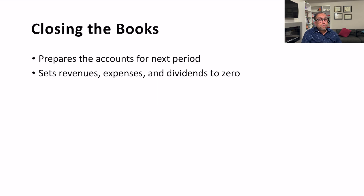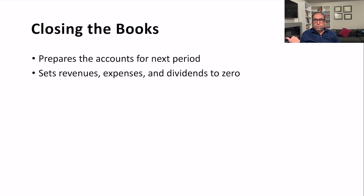We need to close the books because revenue, expense, and dividend accounts are temporary accounts. They are open for one accounting period — one year — and after that we have to close them so that we start a new year with a clean slate: no expenses, no revenues, and no withdrawals or dividends from the previous period. This gives us zero balances in those accounts to prepare them for the next period.